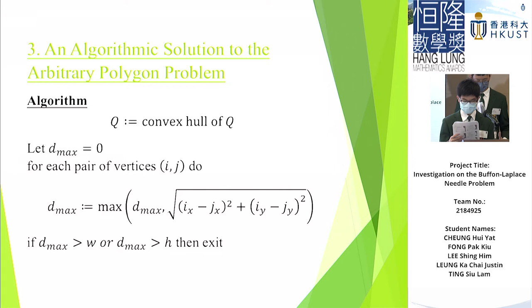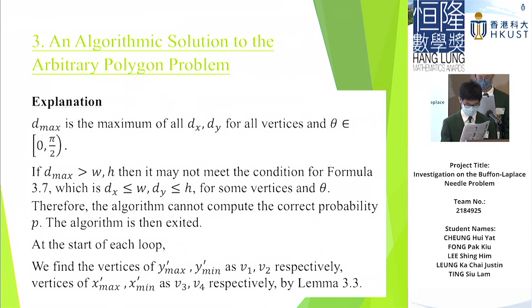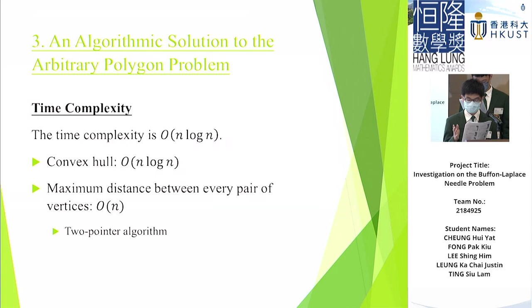So first of all, we will check if Q is suitable for the algorithm. Then, we will go through the loop of theta from 0 to π/2. For each iteration of theta, the vertices do not change. And then we can find the probability of number of intersections and add to the variable sum. And the probability is equal to 1 minus 2 times sum over π. Okay, so now the time complexity is order n log n.